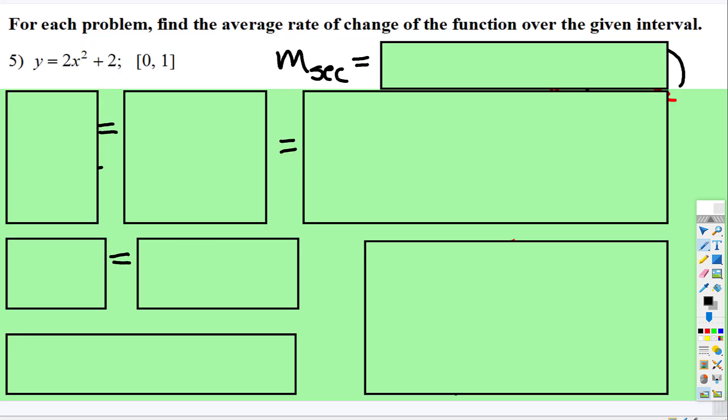So here's an example. They give you this function right here, y is equal to 2x squared plus 2. They say what you're going to look at, you're going to draw a line of that graph between the x point that's 0, so that's x is 0, and x is 1.